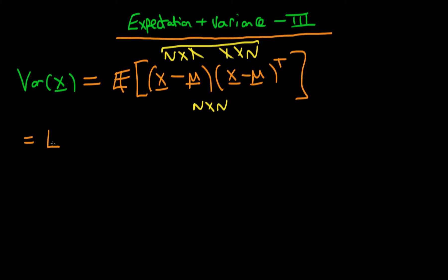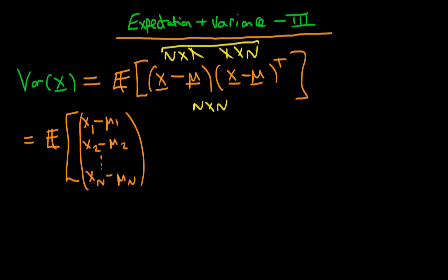Let's think about what this means element-wise. The expectation of this: the first element of the column vector is x1 minus mu1, the second is x2 minus mu2, continuing all the way down to xn minus mu_n. The second term is just the first term transposed, so the components are x1 minus mu1, x2 minus mu2, continuing to xn minus mu_n.